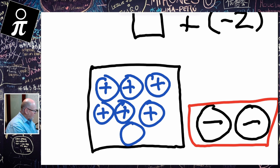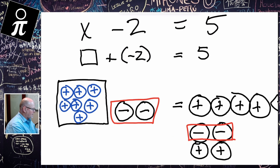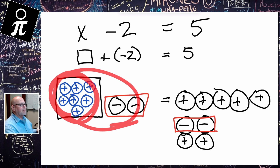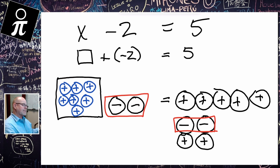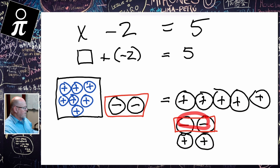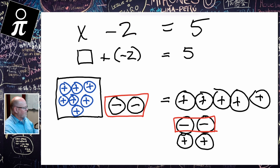Now our two sides of the equation are exactly the same. On the left we have seven positives for our x and two negatives, and on the right we have seven positives and two negatives. So we know that x has to equal seven positives. And sure enough, it makes sense: seven minus two is equal to five.